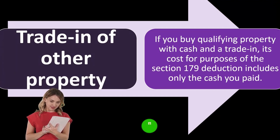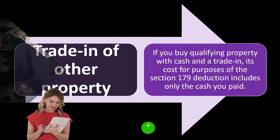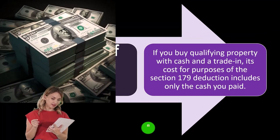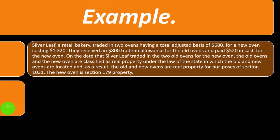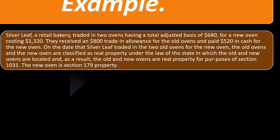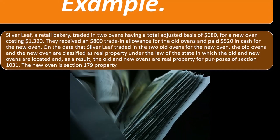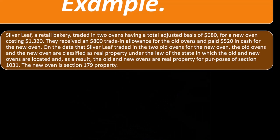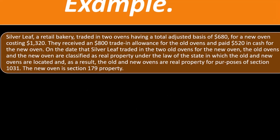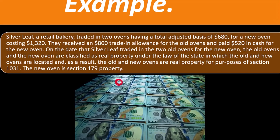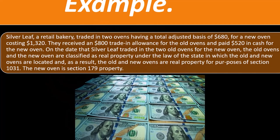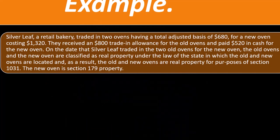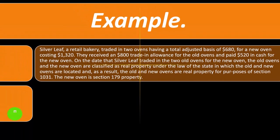For trade-ins: if you buy qualified property with cash and a trade-in, its cost for Section 179 purposes includes only the cash you paid. Example: Silver Leaf, a retail bakery, traded in two ovens with a total adjusted basis of $680 for a new oven costing $1,320. They received an $800 trade-in allowance and paid $520 in cash for the new oven.